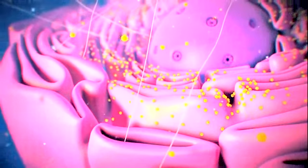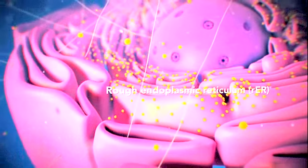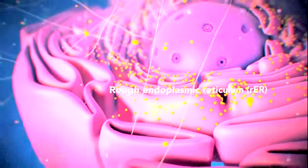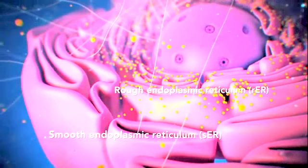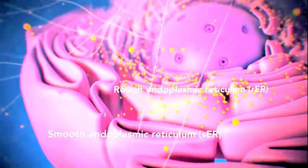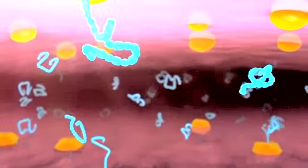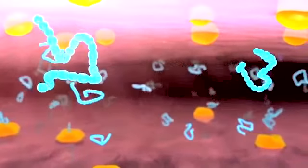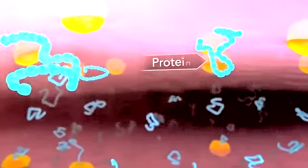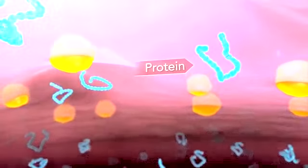There are two types of ER. Rough ER has ribosomes attached to it, and smooth ER doesn't have ribosomes attached to it. The endoplasmic reticulum is a membrane-enclosed passageway for transporting materials, such as the proteins synthesized by ribosomes.